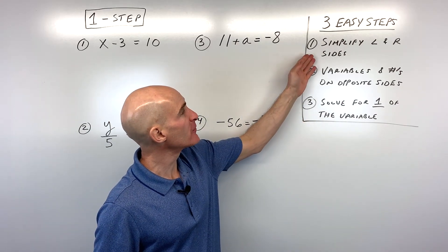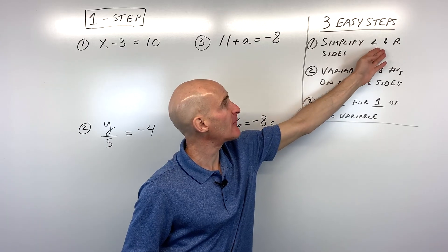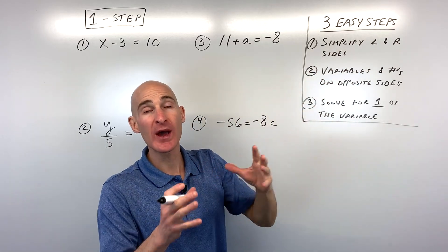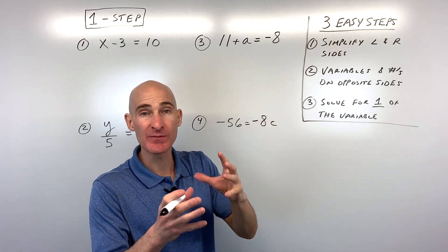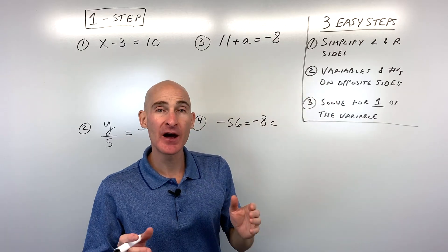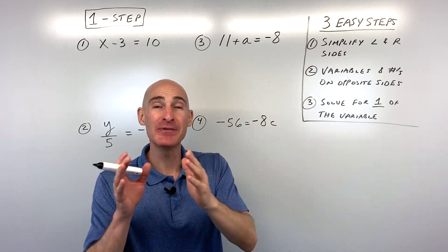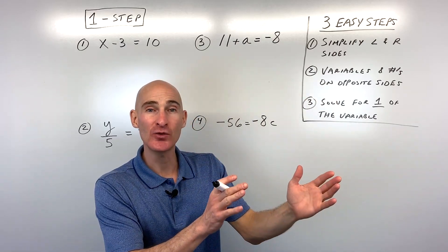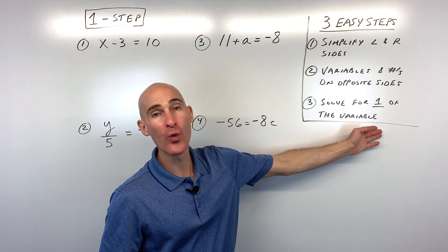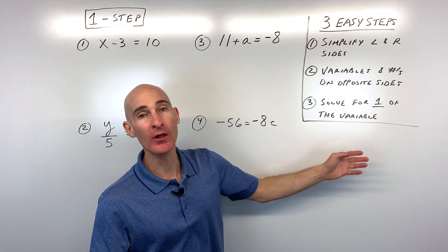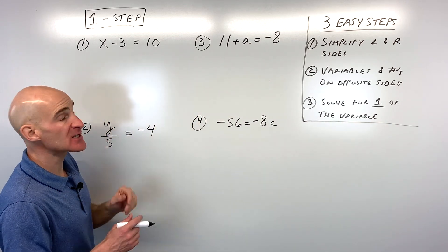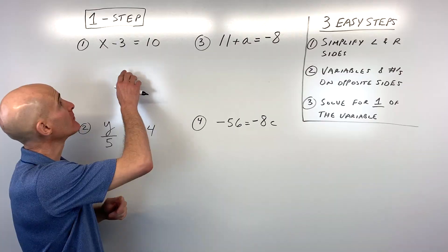The first step is you want to simplify the left and right sides of the equation as much as you can. Then you want to get the variables and the numbers on opposite sides of the equal sign. The last step is you always want to solve for just one of the variable. Go ahead and pause the video if you want to try some of these on your own — we'll go through them together.